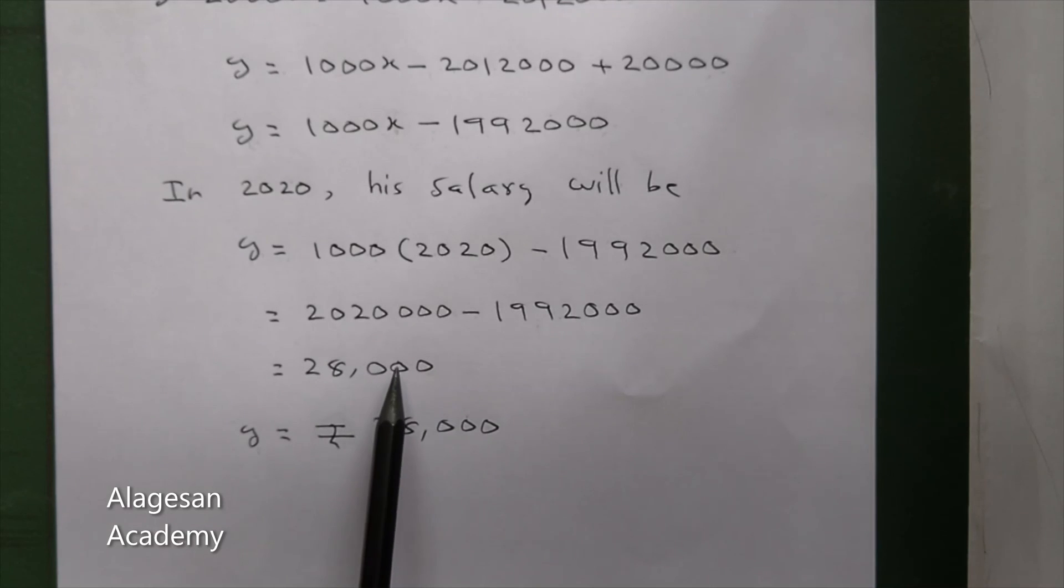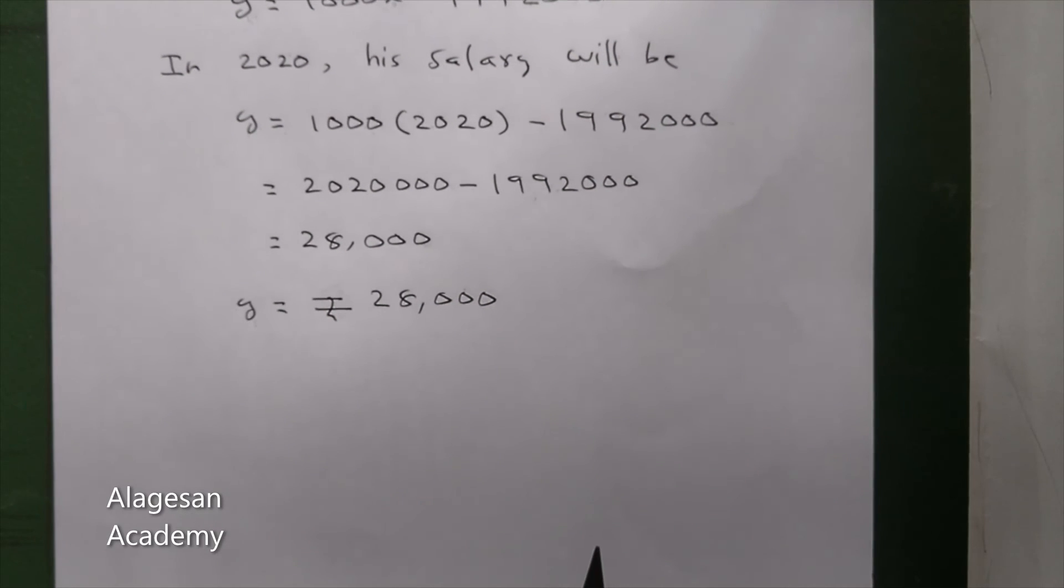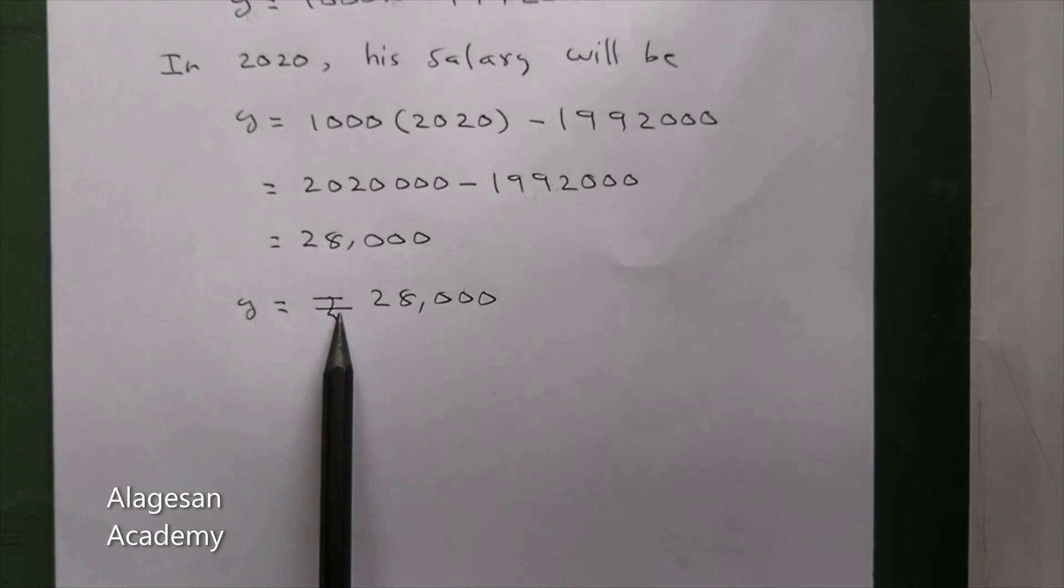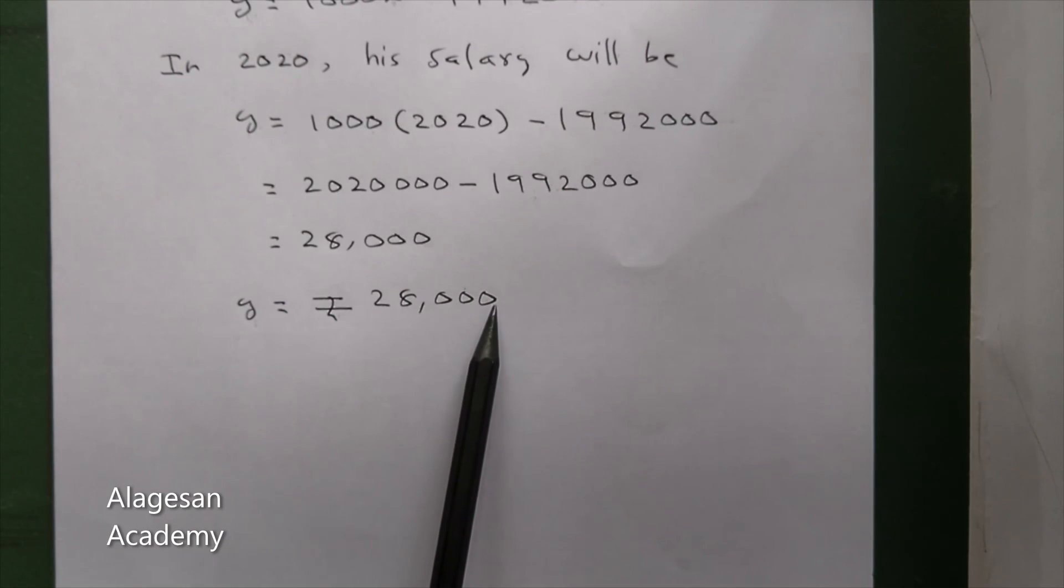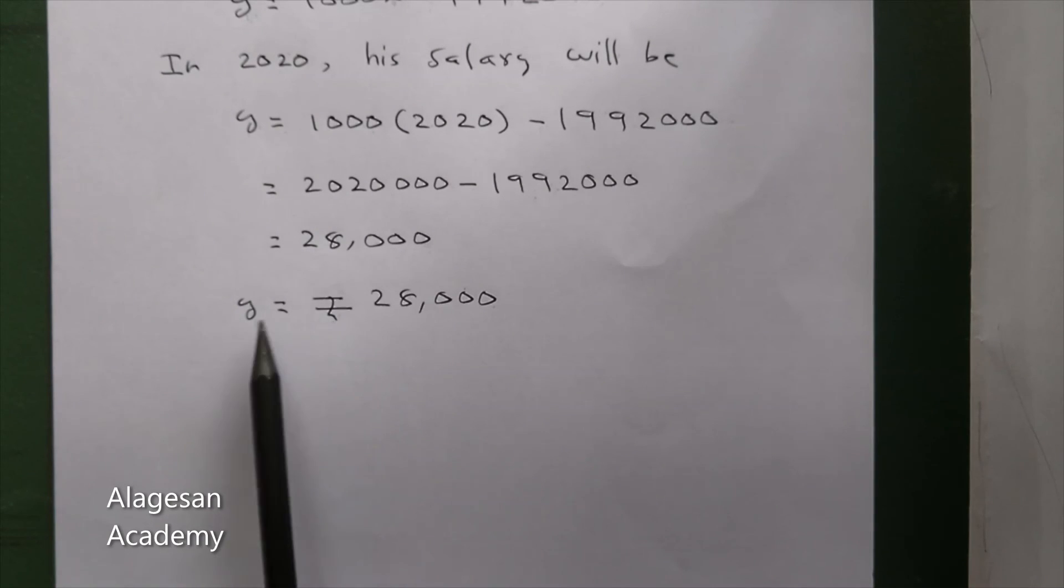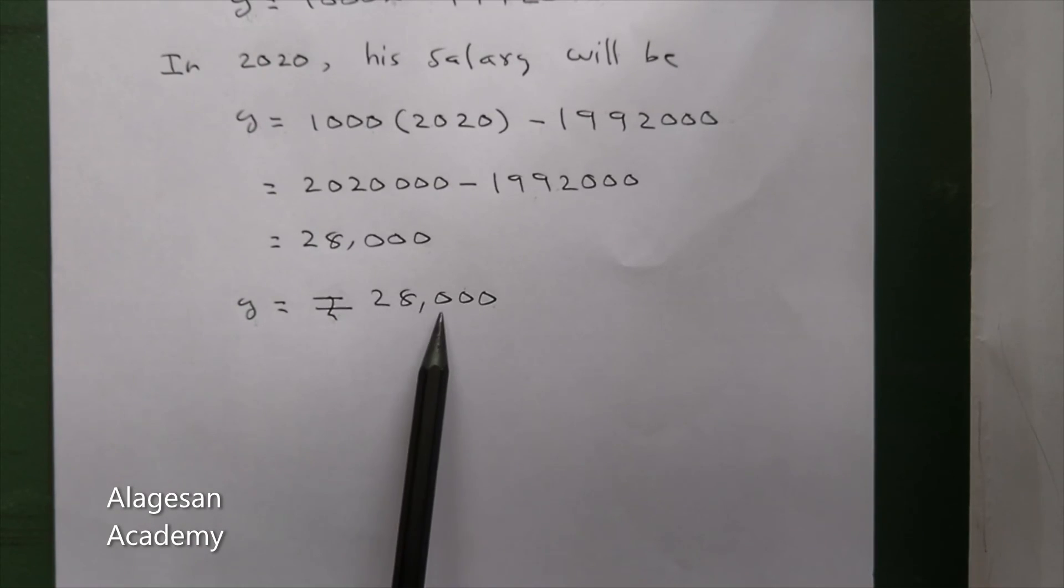That gives us 2,020,000 minus 1,992,000, which equals 28,000. Can you understand this problem?